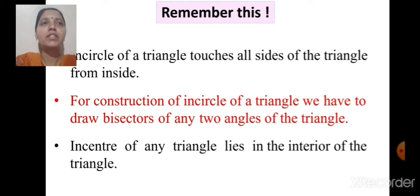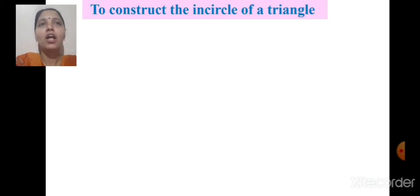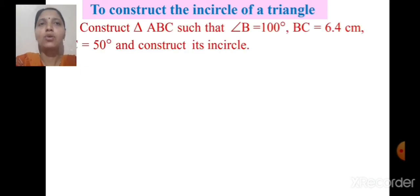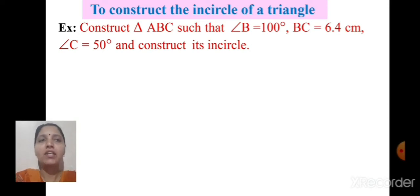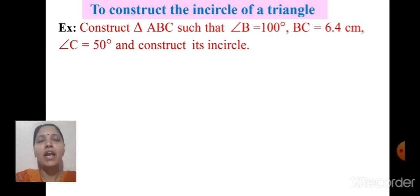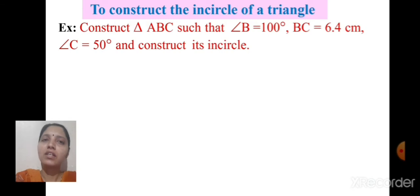So let's start with the construction. To construct the incircle of a triangle, few steps you have to follow. Here I have given you the first sum of practice set 6.3: Construct triangle ABC such that angle B is equal to 100 degrees, BC is equal to 6.4 cm, angle C is equal to 50 degrees, and construct its incircle.